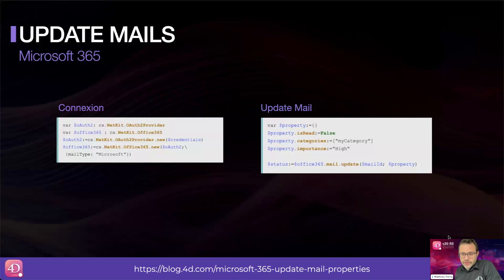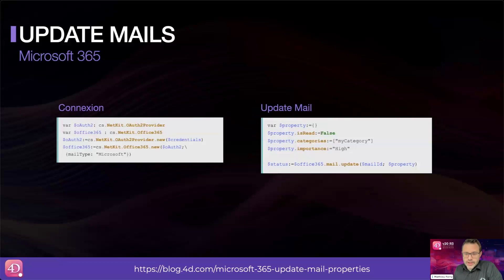Continuing with emails: in response to your requests on the forum, we are introducing a new command to address needs regarding the is-read flag for emails. With 4D v20 R3, 4D NetKit now allows you to modify various properties of received and drafted emails using the office365.mail.update function. Thanks to the Microsoft Graph API, this function enables modification of multiple email attributes. Note that certain properties such as the body text or subject can only be modified if the email is in draft status.